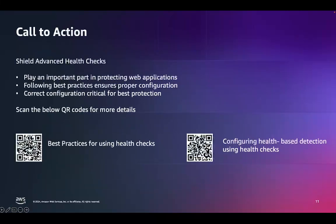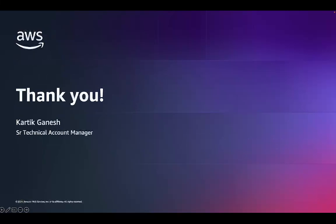Shield Advanced health checks are an important part of protecting your application from DDoS attacks. By following the best practices outlined in this video, you can ensure that your Shield Advanced health checks are configured correctly and providing the best possible protection for your application. You can also find more information in the AWS documentation. QR codes are provided so you can scan them and access additional documentation for Shield Advanced health checks. Thank you for your time, and happy cloud computing from all of us at AWS.